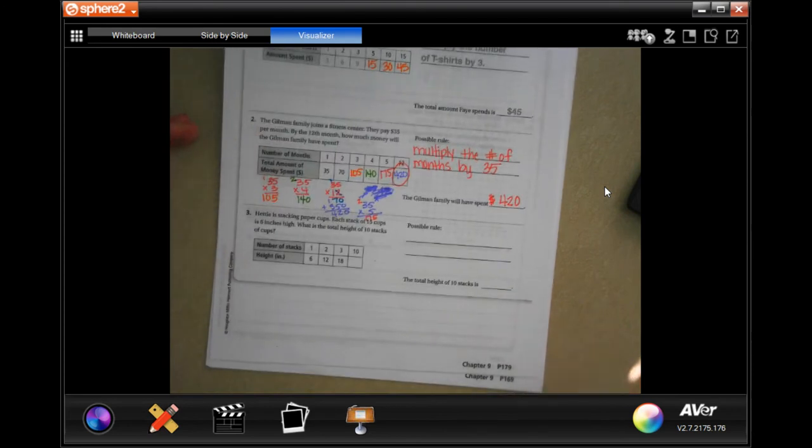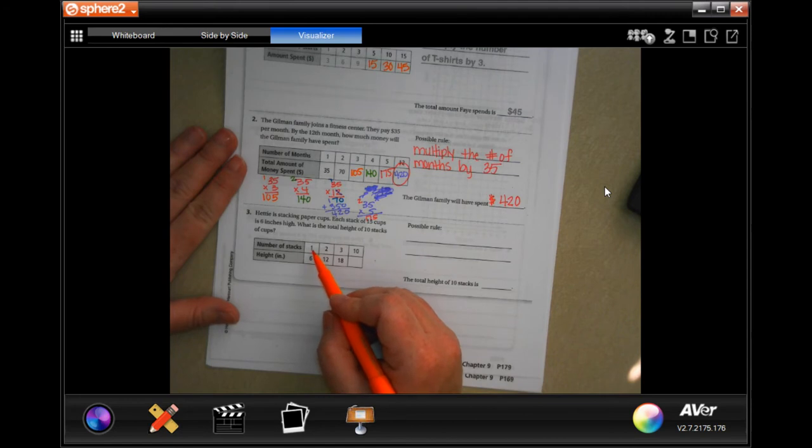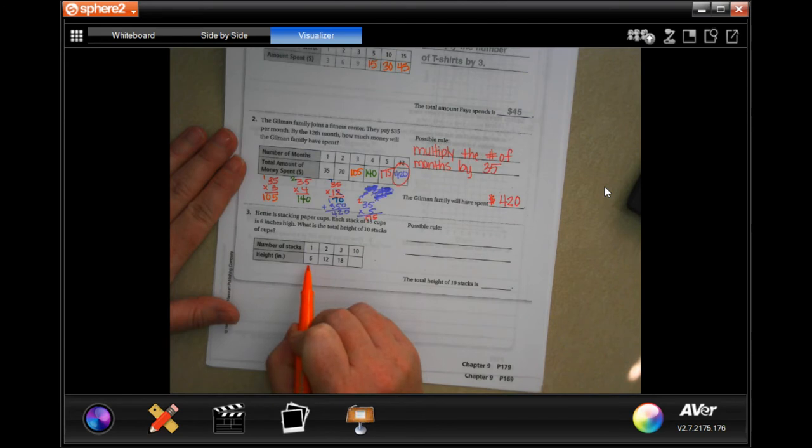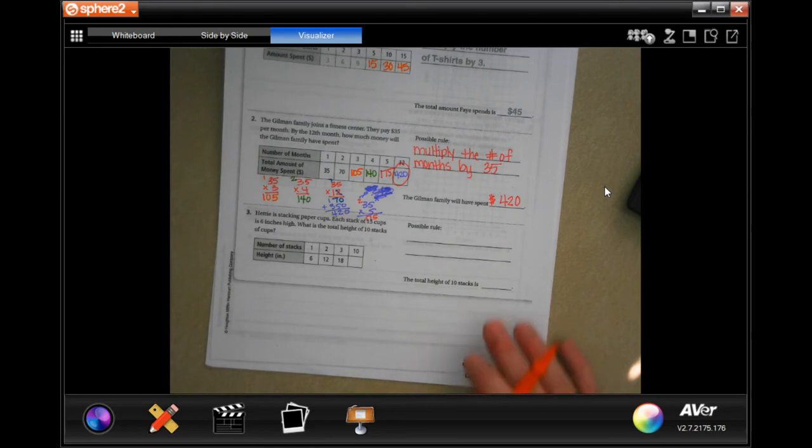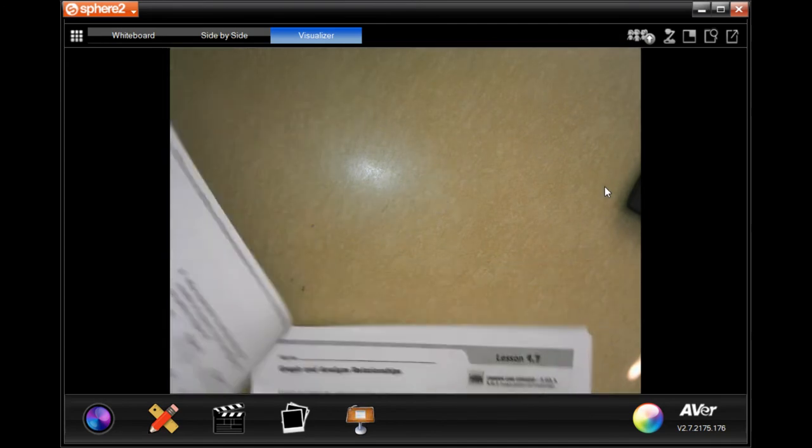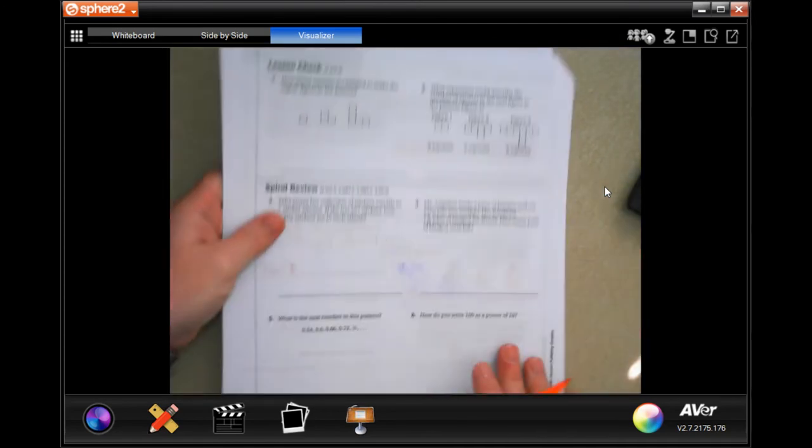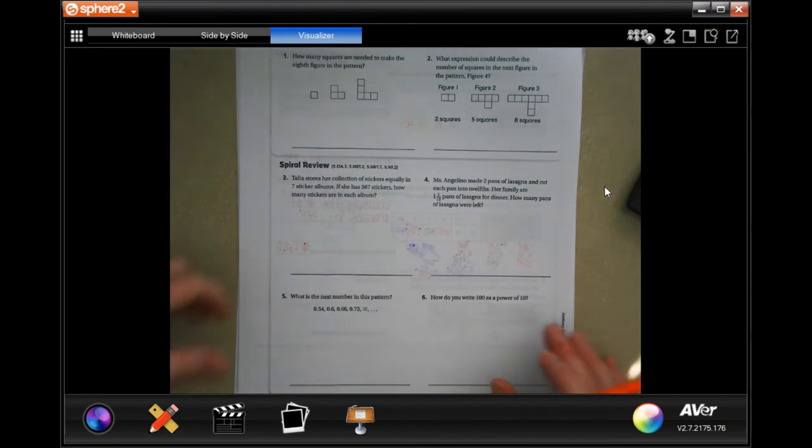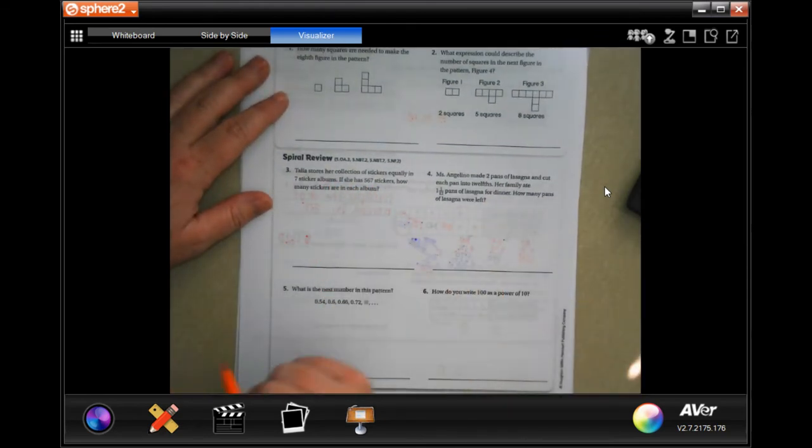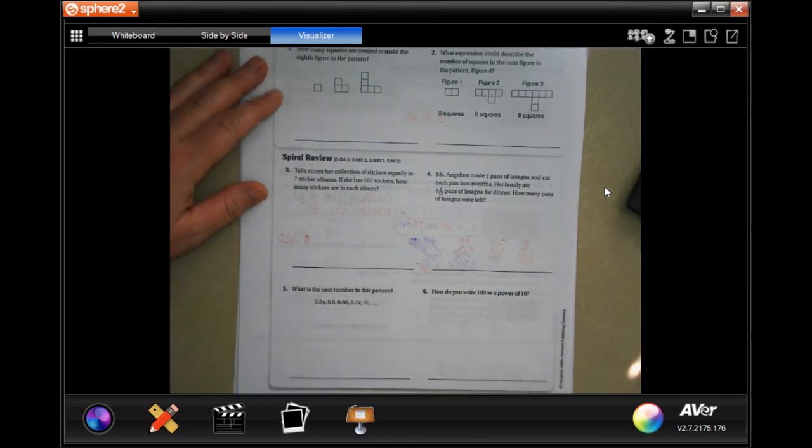This one is giving you 1 times 6, so your rule is going to be to multiply the number of stacks by 6 and then find that last number there. All right, we're going to go to the back where you guys are going to do the lesson check and we're going to go down to final review. Miss Torres puts a collection of stickers equally in seven sticker albums. She has 567 stickers. How many stickers are in each album?